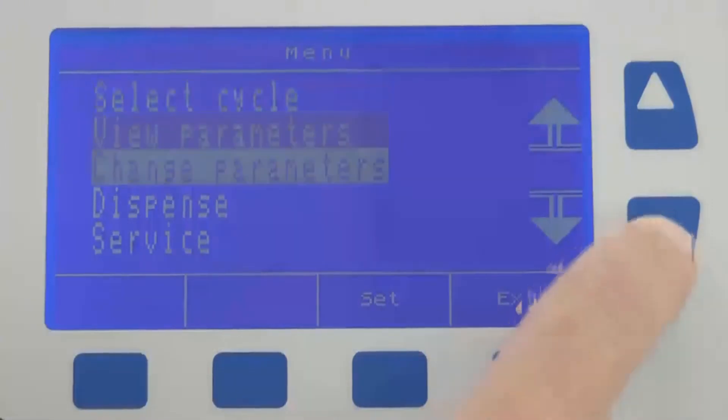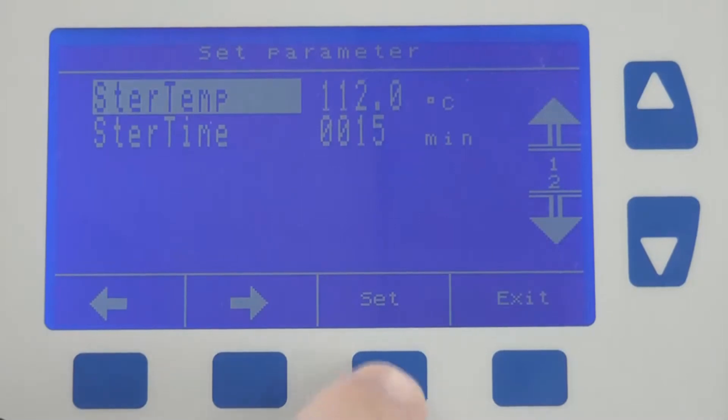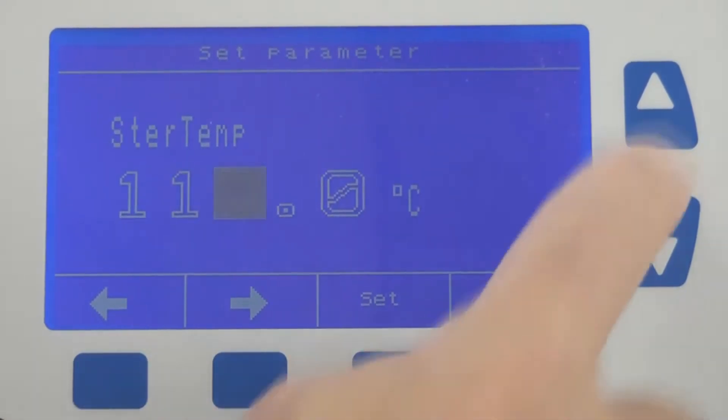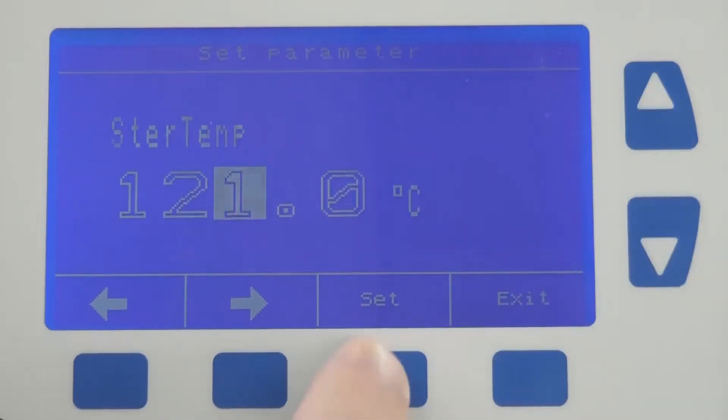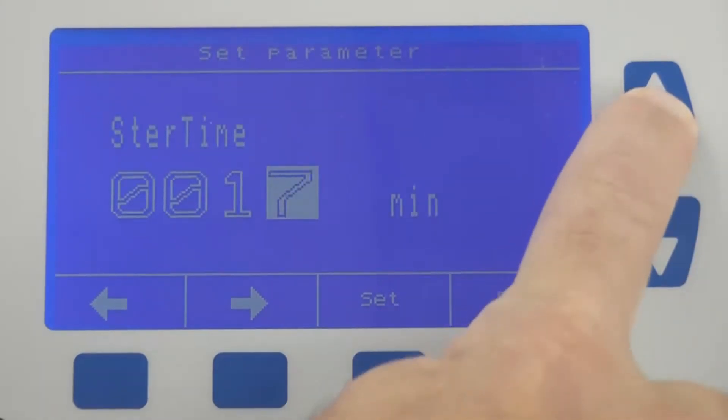Programming the media prep system is very straightforward. After entering an access code, simply select the parameter you wish to change. In this case, we are going to change sterilization temperature from 112 degrees Celsius to 121 degrees Celsius, and sterilization time from 15 minutes to 20 minutes.